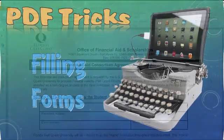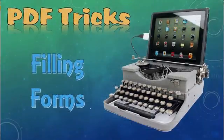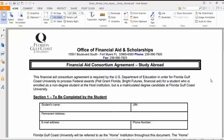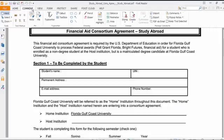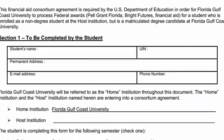Let's talk about completing a form that doesn't have fillable fields in Foxit Reader. I found a PDF online that makes a good example — something from my university. Once you open it, go to the Comment menu in the top menu bar and you'll see a button called Typewriter. Once you click on that, you can click within any field, and if the font and font size look okay, you can just type very easily.